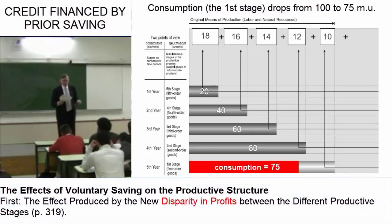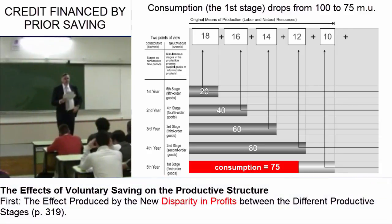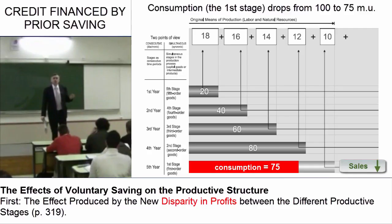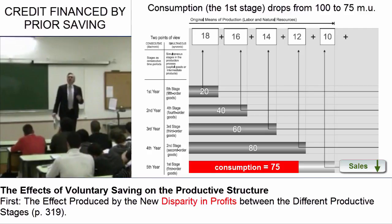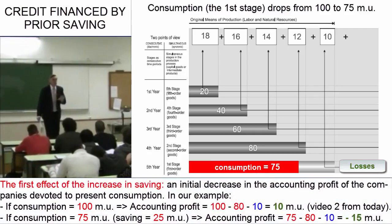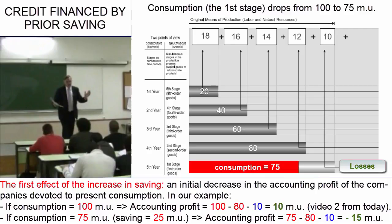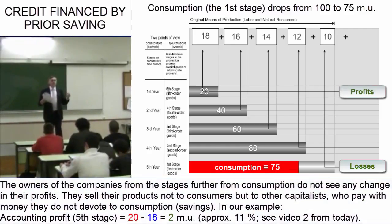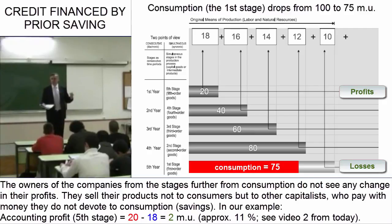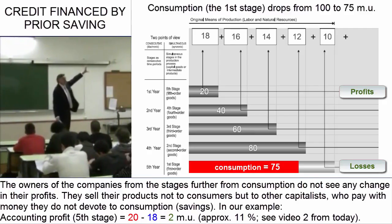The first effect is that if we suddenly decide to consume less and spend 75 instead of 100, sales at the Corte Inglés will go down, and the accounting profits of companies closest to consumption will begin to decline. Because an increase in saving means less consumption, it gives rise to an initial drop in the relative profits of companies closest to consumption. Meanwhile, the profits of companies furthest from consumption remain unchanged, since they are producing goods that will mature in 2, 3, 4, or 5 years' time. So there is a disparity in profits.